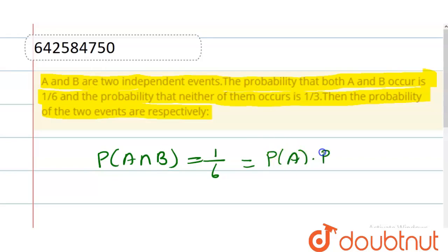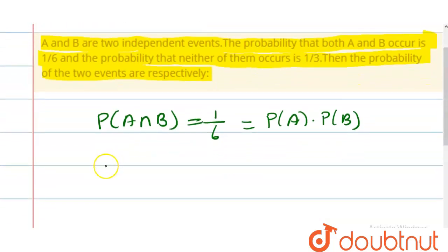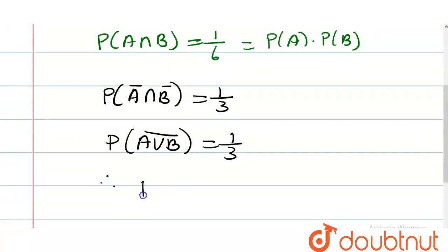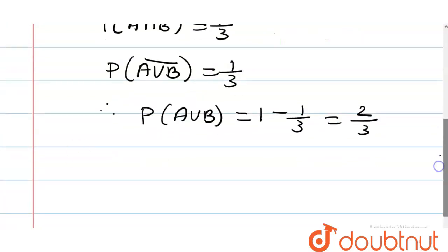Now, the probability of not occurring both is P(A' ∩ B'), given by 1/3. We can write this using the property P(A∪B)' equals 1/3. Therefore, P(A∪B) equals 1 minus 1/3, that is equal to 2/3.